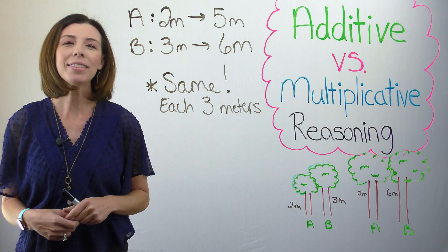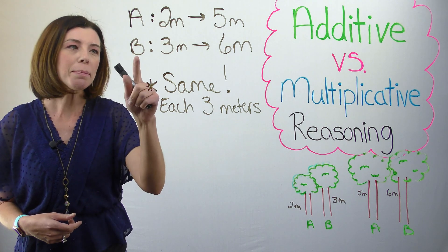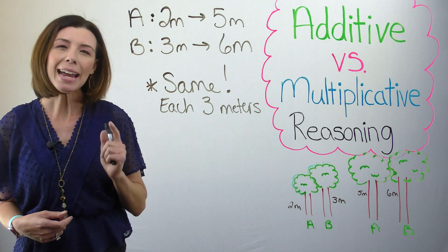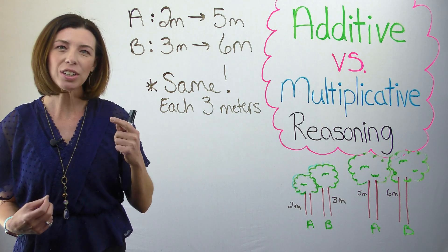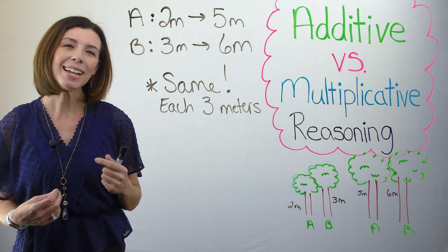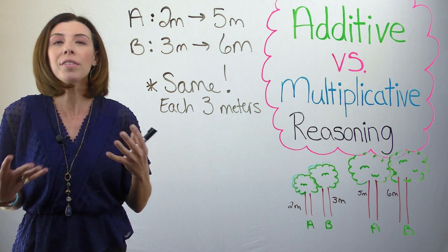There is another way to think about this, though. If you said that tree A grew more, because tree B doubled in size, but if tree A doubled in size, that would mean it was only four meters. So actually, tree A more than doubled in size. So you might say that tree A grew more because it grew more than double.